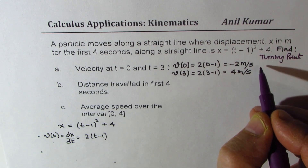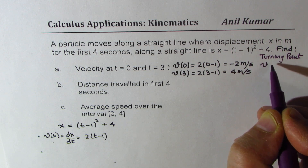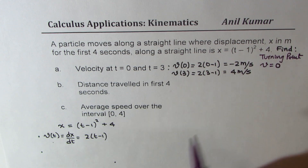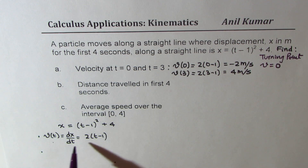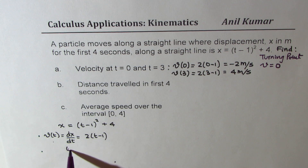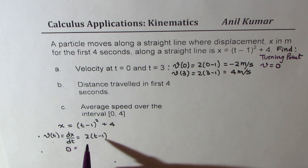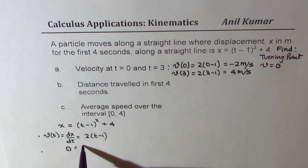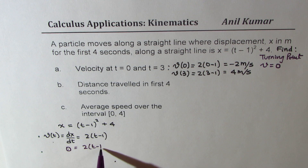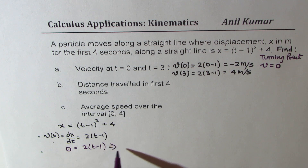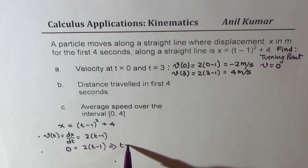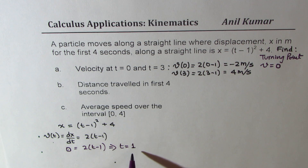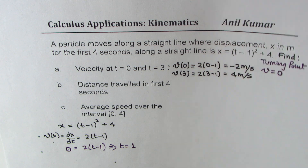A turning point means we are looking for the time when velocity equals 0. Substituting 0 into the expression 2 times t minus 1, we get the value of t equal to 1. So at 1 second, the object changes direction — that is very critical to understand.